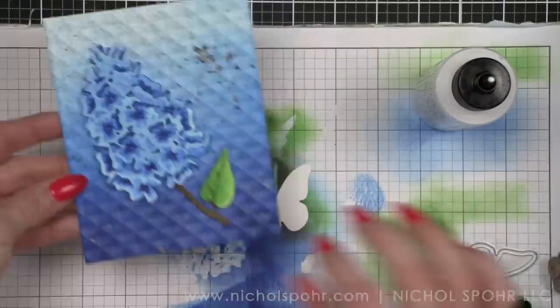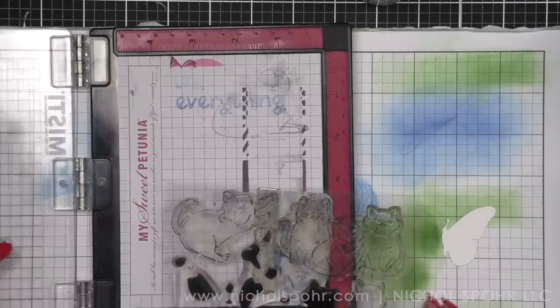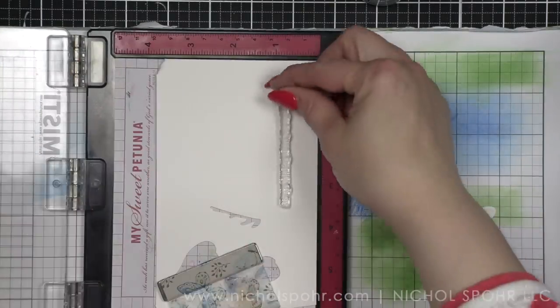I did pop everything up with foam adhesive. I was able to hide foam adhesive underneath all the little pieces of the butterfly bush and pop that up. The branch was glued directly to the background, and the leaf was popped up as well.